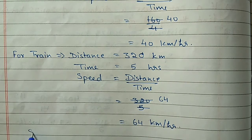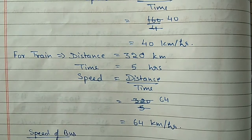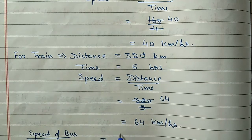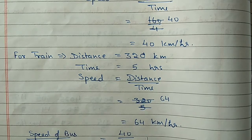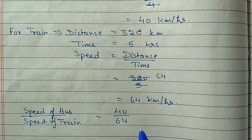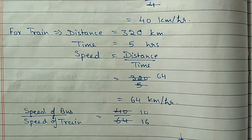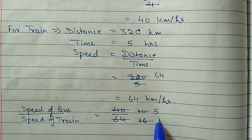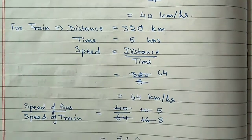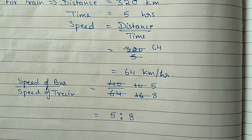Now we find the ratio of bus speed to train speed: 40 to 64. The km/hr units cancel out. Dividing by 4: 40/4 = 10 and 64/4 = 16. Dividing again by 2: 10/2 = 5 and 16/2 = 8. So the answer is 5 : 8. This exercise is now complete. Hope you understood these questions. Thank you for watching this video.